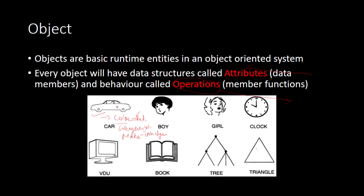Apart from attributes, we can also have operations related to the object. For example, with a car I can have an operation called drive, another called accelerate, and even one called braking — when you want to stop the car. So any object which has a set of attributes and a set of operations can be called an object.